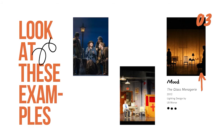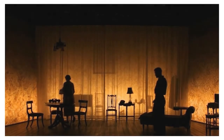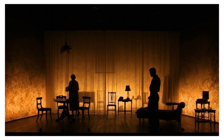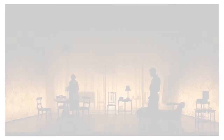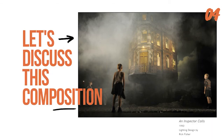The third function of stage lighting is to set the mood. In this design for The Glass Menagerie, L.B. Morse establishes the mood of nostalgia, regret, and despair that is so much a part of that play, all through the use of lighting. The fourth function of stage lighting is to create a composition. In this design for An Inspector Calls, lighting designer Rick Fisher guides the audience's eye from point of interest to point of interest, moving from the house to the three characters on the stage. Notice what's being lit, what is in shadow, and how your eye is guided directly to what you need to look at.